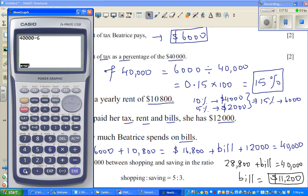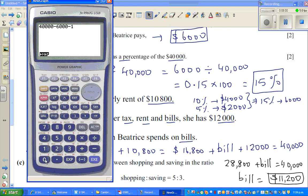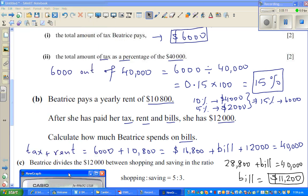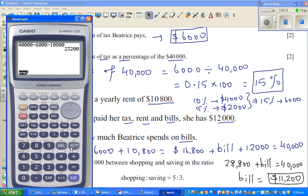$40,000 is her income. From that she first takes away $6,000 as tax, minus $10,800, which is $23,200. Minus $11,200 is the bill, which leaves $12,000. That's right. So this is total income minus tax minus rent. From that, this is the balance, and if you take away the bill, this is the balance. And that does tally with our answer.